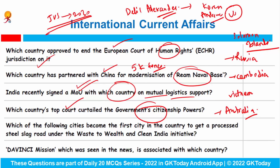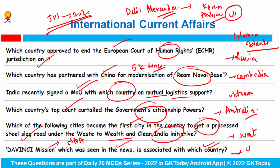Dalil Alexander had been suspected to be an Islamic State Group fighter, which was the reason his Australian citizenship was revoked. Which city became the first city in the country to get processed steel slag under the Waste to Wealth and Clean India initiative? The answer is Surat. The Da Vinci Mission, which was seen in the news, is associated with which country? This mission belongs to NASA, so the answer is USA. Da Vinci stands for 'Deep Atmosphere Venus Investigation of Noble Gases, Chemistry and Imaging'.